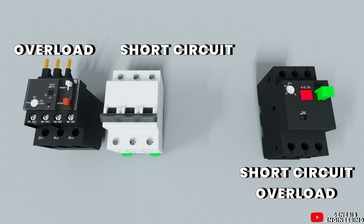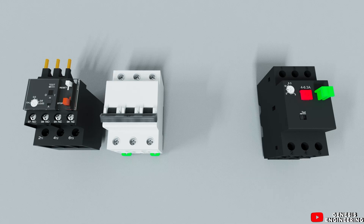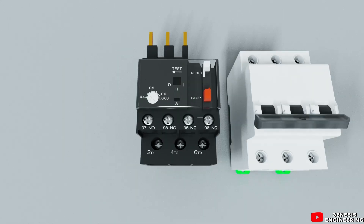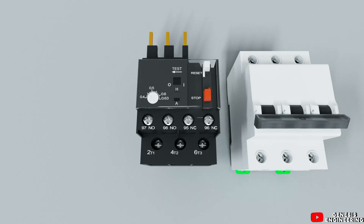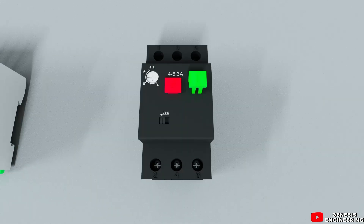With the motor circuit breaker we already have protection against both short circuit and overload. And, as with the thermal relay, on the motor circuit breaker you also have the option to adjust the current for thermal protection against overload.